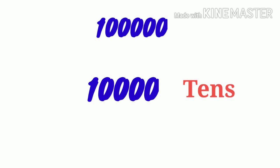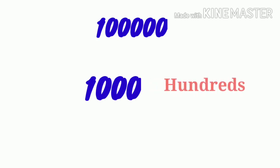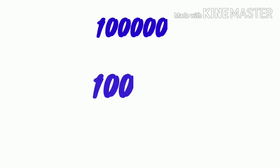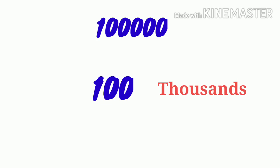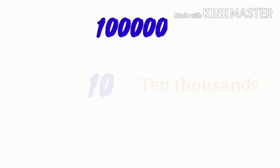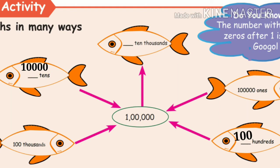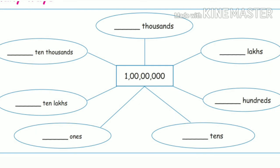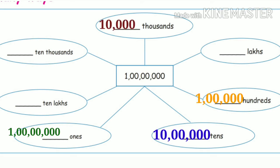One lakh equals ten thousands, which equals one hundred hundreds. The activity on page 27 shows lakhs and crores in many ways: how many ones, tens, hundreds, thousands are in one lakh and one crore. Ten ten-thousands make one lakh; ten lakhs make one crore.